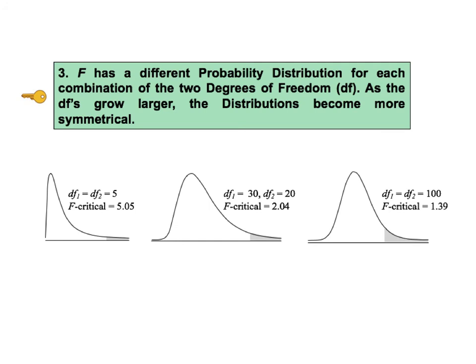Key to understanding number three begins by saying that there is a different F distribution for each combination of values of the two degrees of freedom. There are three examples shown here. They are not drawn to scale. In the distribution on the left, DF1 and DF2 equals 5. For the distribution on the right, the two degrees of freedom are also equal. But in that case, they equal 100.